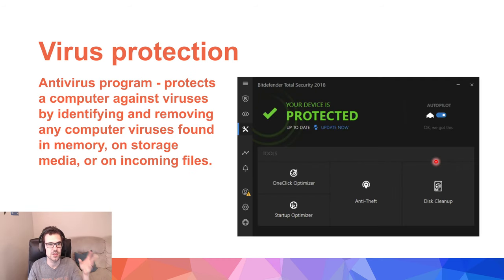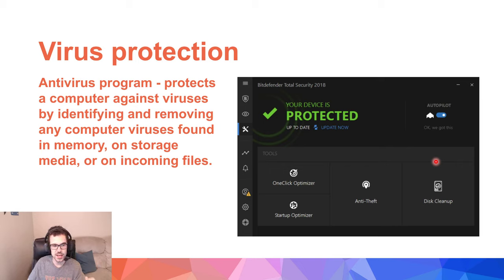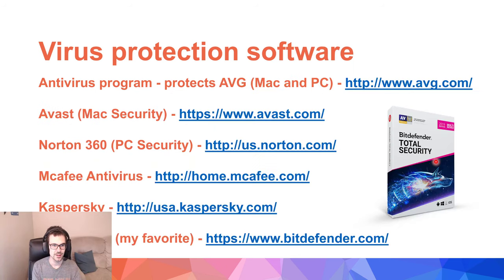So how do you combat these problems? Antivirus protection software is really where protection starts. It protects your computer against viruses by identifying and removing any computer viruses found in memory, storage media, and incoming files. You can open this software and run a scan of your computer if you think you've been infected — it will find the threats, quarantine them to a segment of the drive, and then you can choose to delete them.